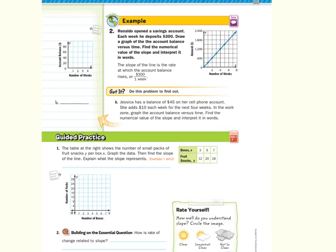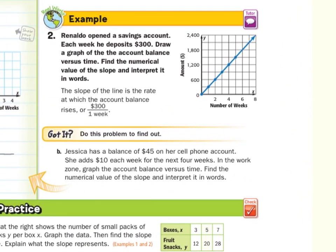In Guided Example 2, Renaldo opened a savings account. Each week he deposits $300. Draw a graph of the account balance versus time. Find the numerical value of the slope and interpret it in words. Well, you can see where they graphed. At 0 weeks he had $0, but after 2 weeks he had $600. After 4 weeks he had $1,200 and so on. The slope of the line is that $300 per 1 week.